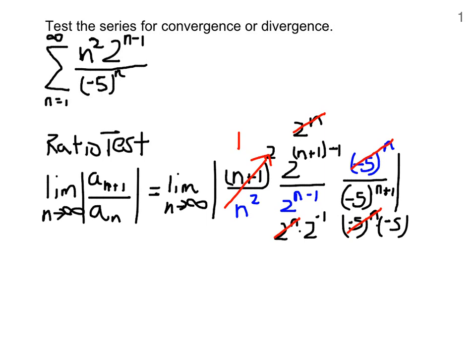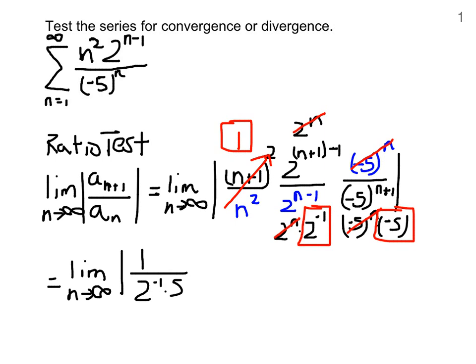This is going to 1. Here we have 2 to the negative 1 and a negative 5. Those are all the surviving terms. We've done the limit already, and this is inside of absolute value. 1 over 2 to the negative 1 times a negative 5.